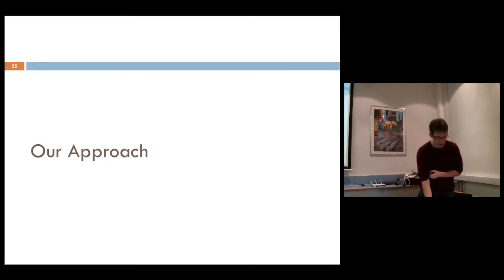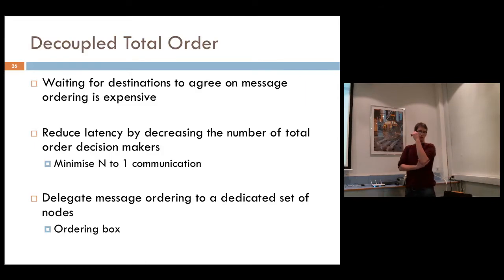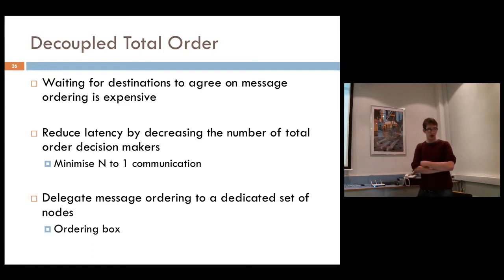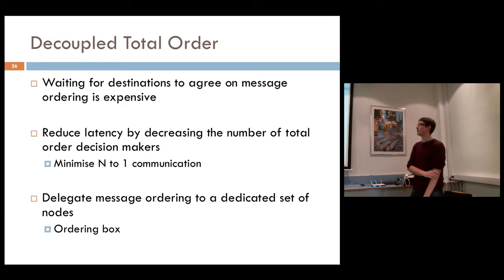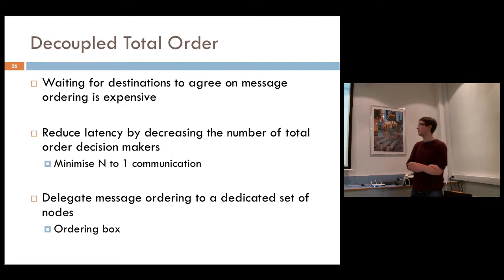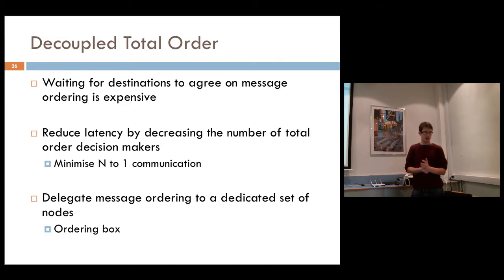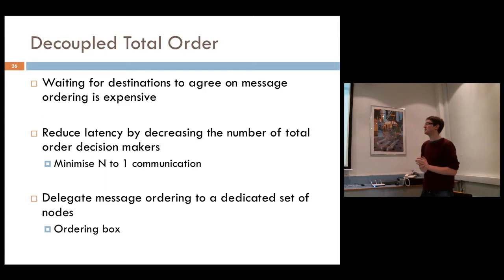Looking at our approach: examining the existing approach, we concluded that waiting for destinations to agree on message ordering is expensive. It would be much better to dictate the ordering to destinations rather than having a democracy. The main principle of our approach is to reduce latency by decreasing the number of total order decision makers — minimizing the number of responses you need for an ordering to occur.